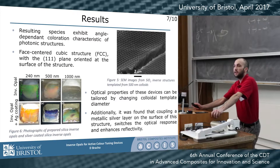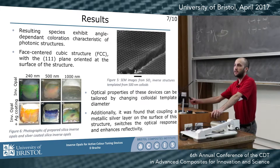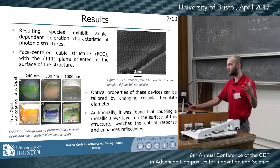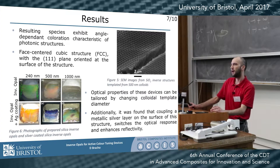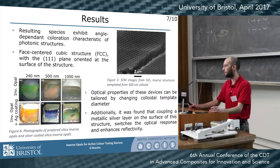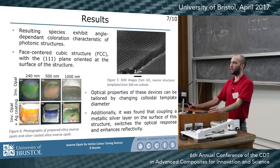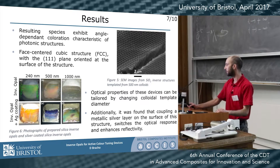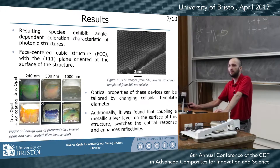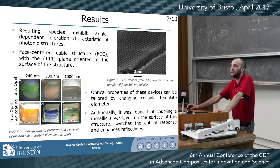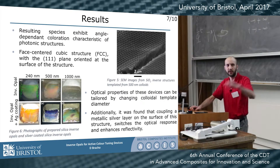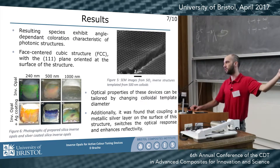The resulting specimens exhibit angle-dependent coloration, which is characteristic of these structures. They have a face-centered cubic structure, particularly with the 1-1-1 plane lined up with the surface of the material. The optical properties can be tuned by changing the polymer colloid size used for templating the structure. Here we work with a range between 240 up to 1,000 nanometers.